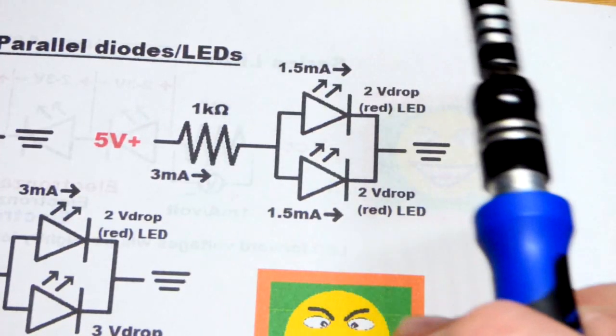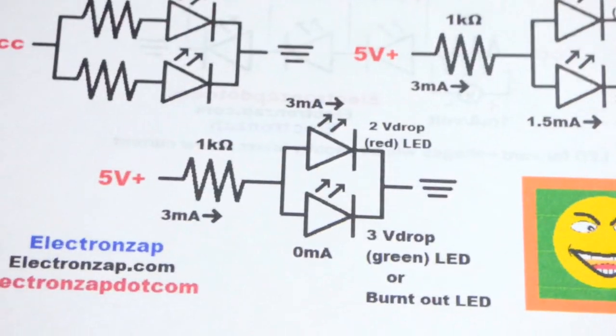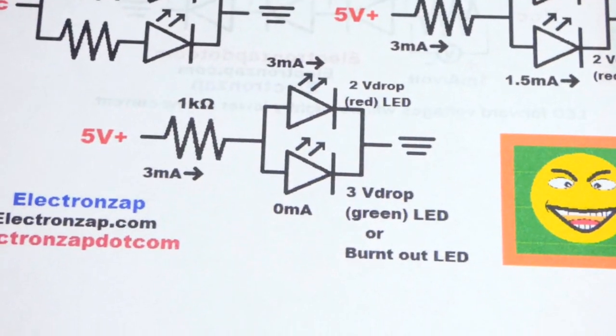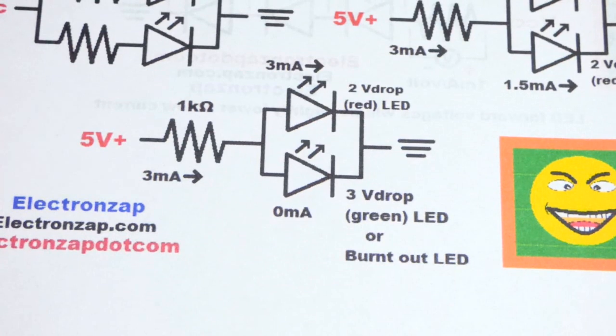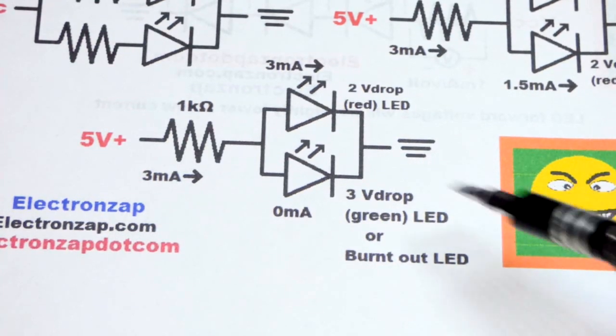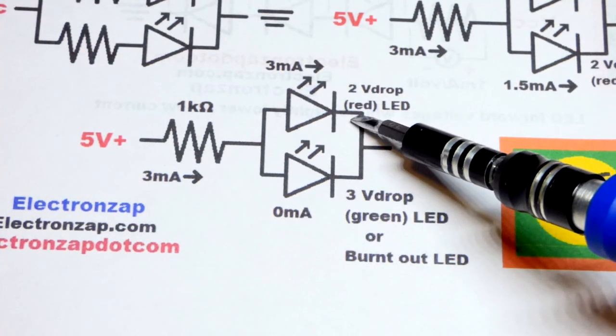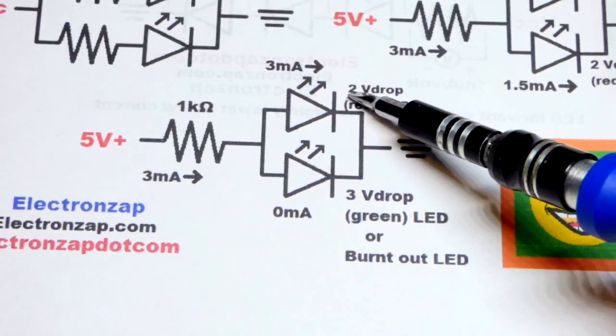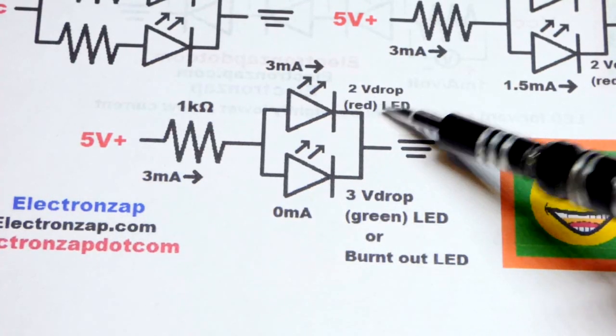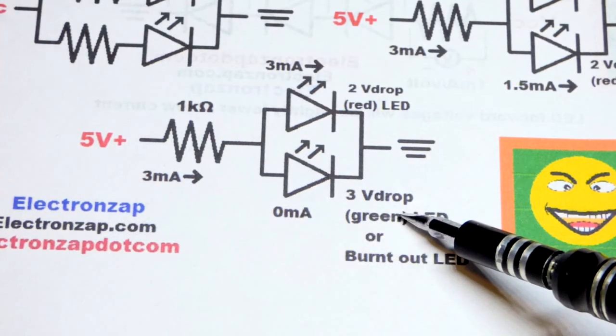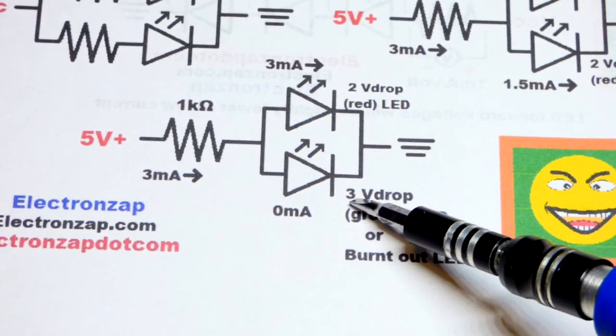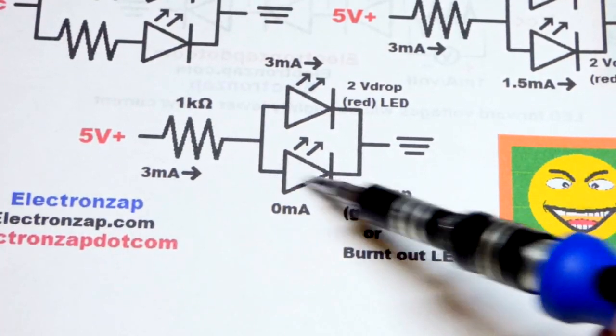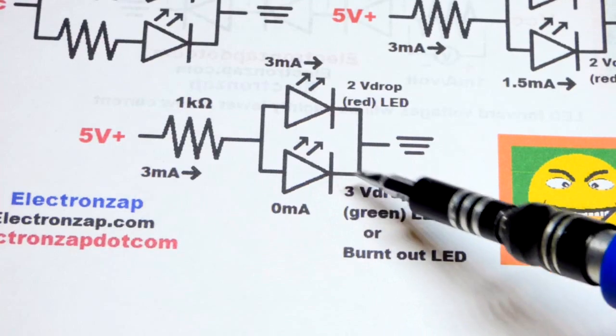And so really no big deal for the most part. Now we're going to look at another scenario though where it could be a problem. So for our demonstration, I'm going to have a yellow or orangish LED that, like the red LED, has a 2 volt forward voltage. The green LED that's going to be parallel with it has about a 3 volt drop. So it takes more voltage to get that LED to conduct, the green one.